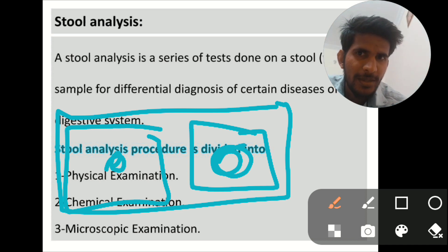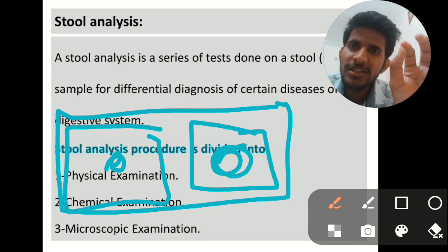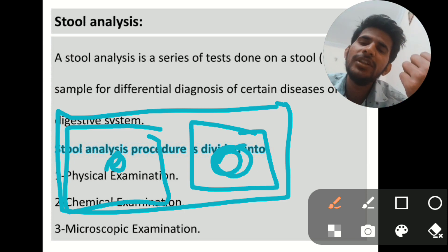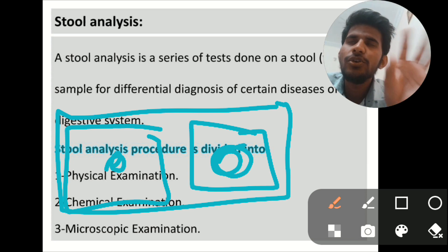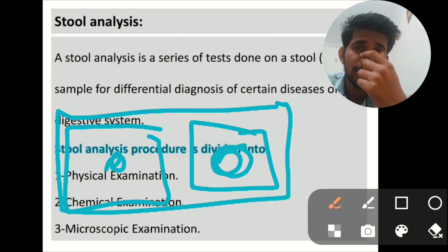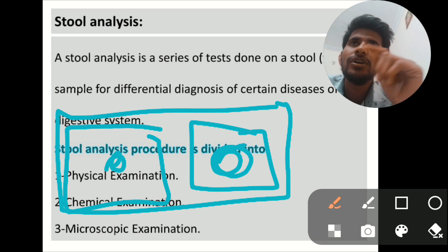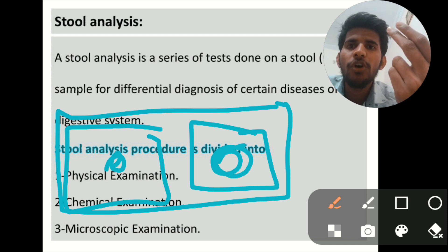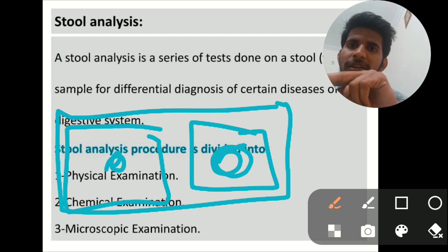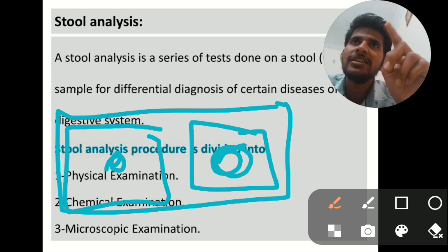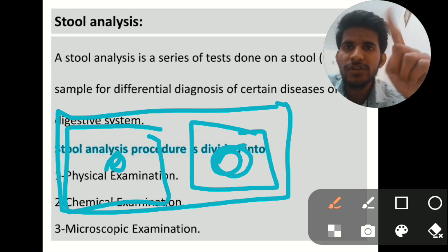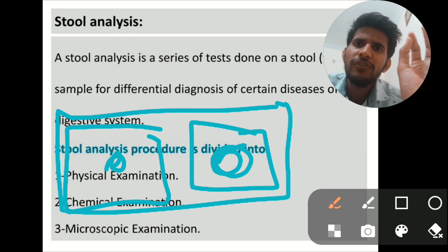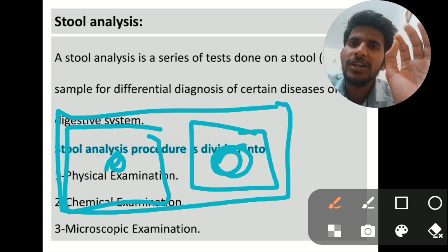Then go with microscopic examination. First see under 10x, and then when you find a trophozoite or cyst form, go with 40x or 100x to identify what it is. If a trophozoite is present, to enhance its motility, take a coin and heat it and touch the corner of that slide. When the slide gets heated up, the trophozoite starts moving so you can see the motility. You should not take more than 15 seconds to see the motility.